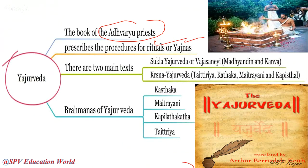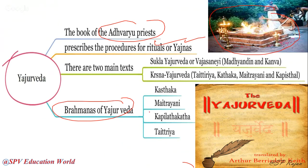Yajurveda is the book for Adhvaryu priests to follow rituals. It deals with Yajnas — performing Yajnas for rain, solving problems, etc. There are two main branches: Shukla Yajurveda (Vajasaneyi — subdivided into Madhyandina and Kanva) and Krishna Yajurveda (Taittiriya, Kataka, Maitrayani, Kapisthala). The Brahmanas of Yajurveda are: Kataka, Maitrayani, Kapisthala Katha, and Taittiriya.